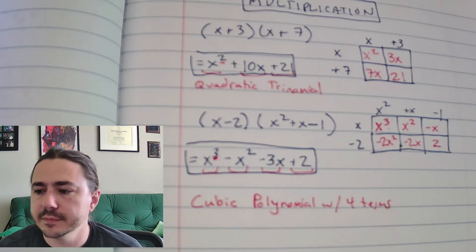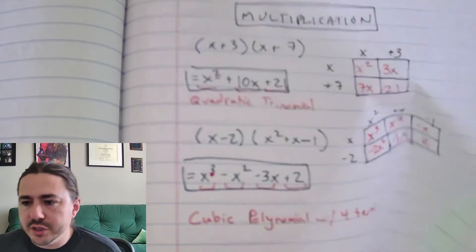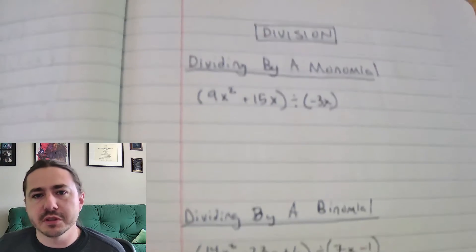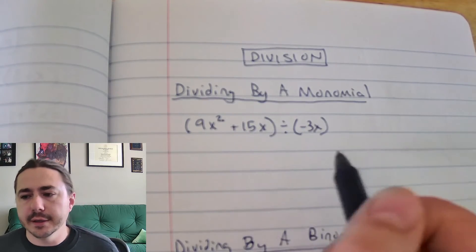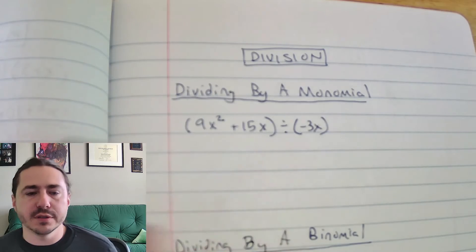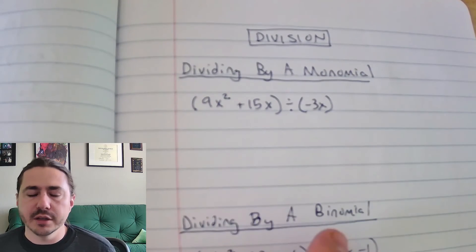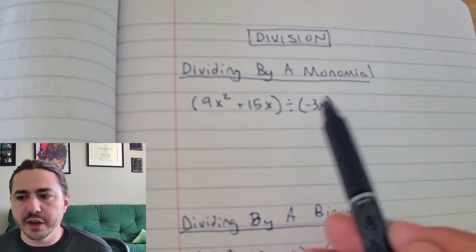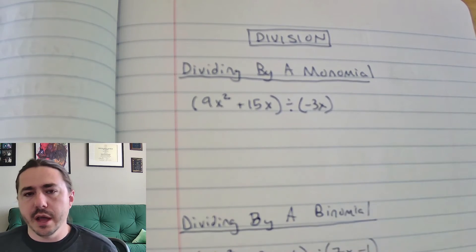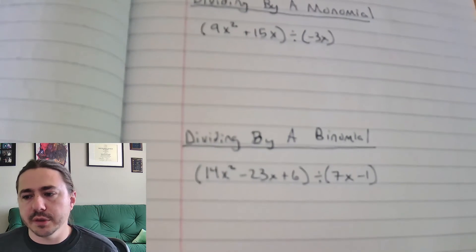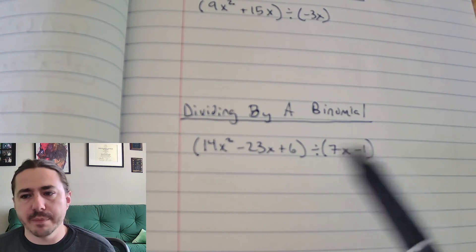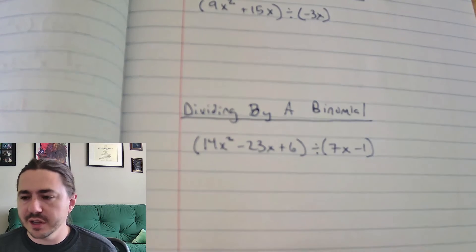Let's take a look at division. Division is probably the most complicated one. I'm going to split it into two categories: the easier type is when you're dividing by a monomial — just a single term — and then it gets more complicated when you divide by a binomial. The same technique I'll show you for the binomial can be used for any polynomial with more terms than that.